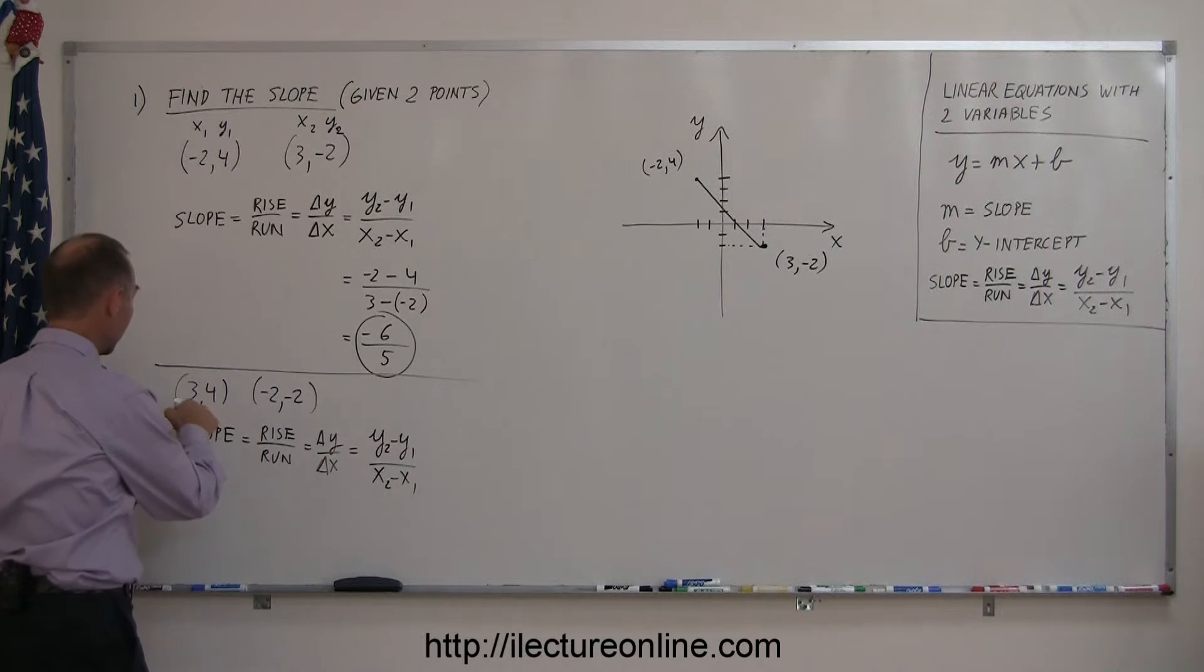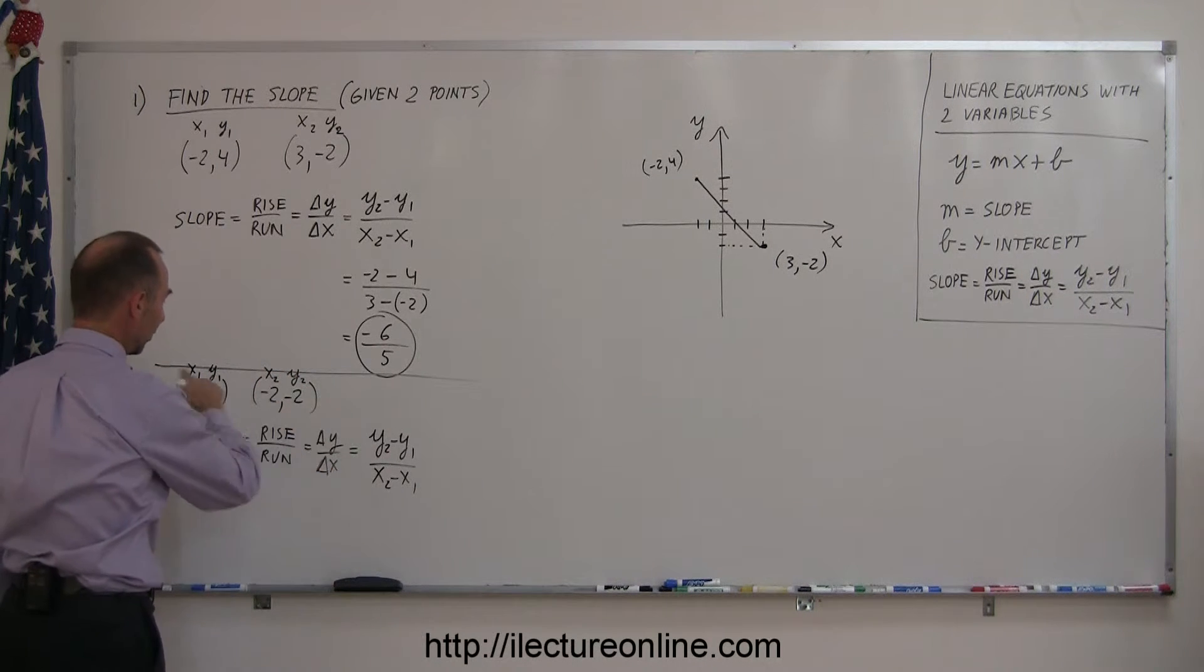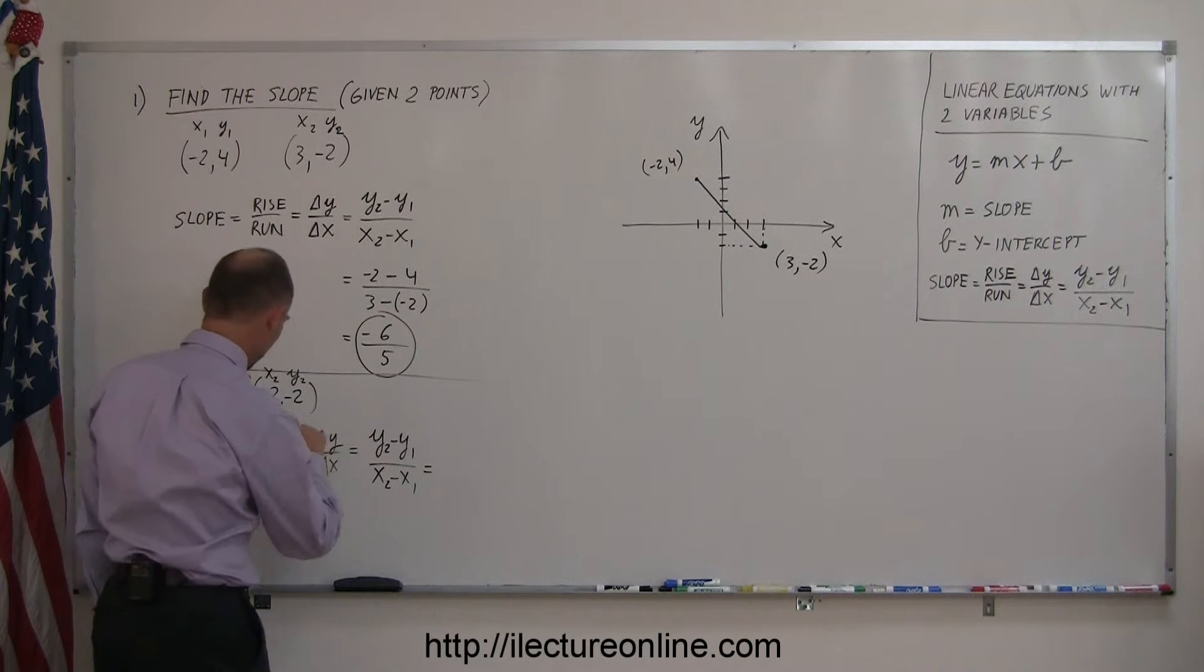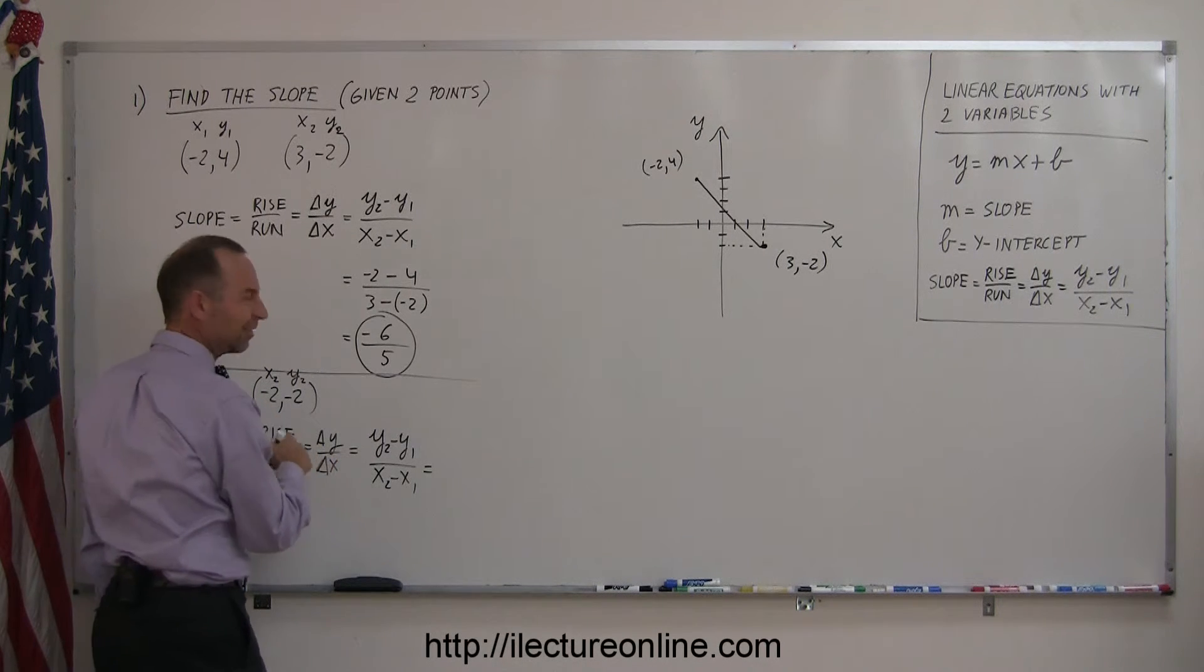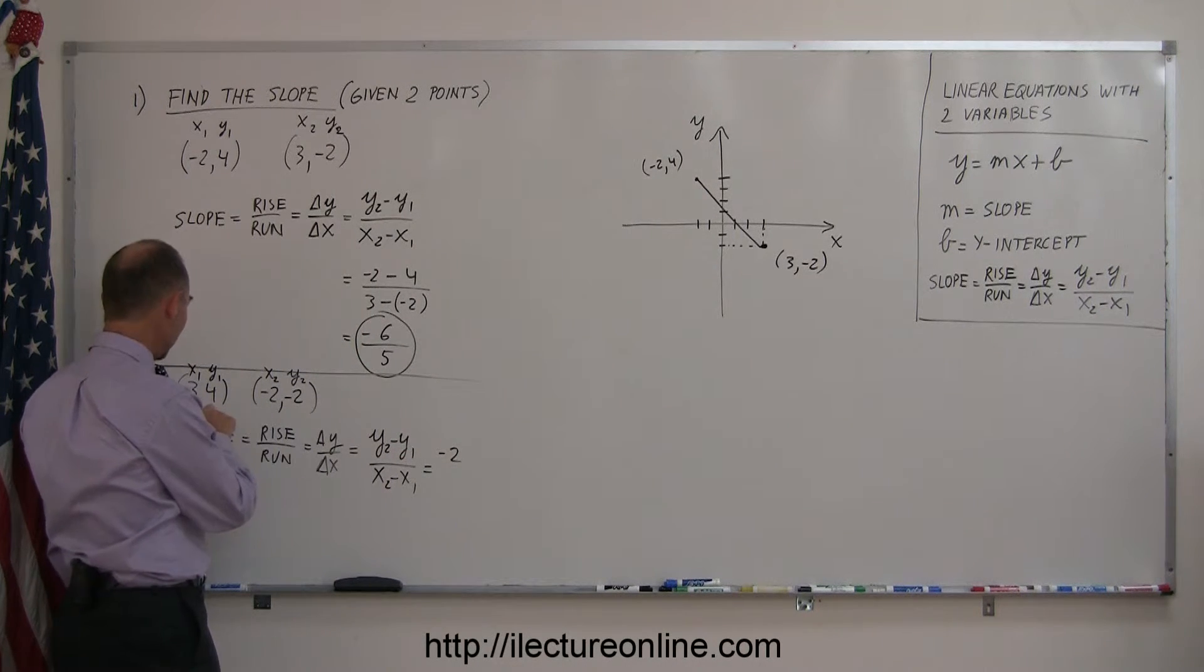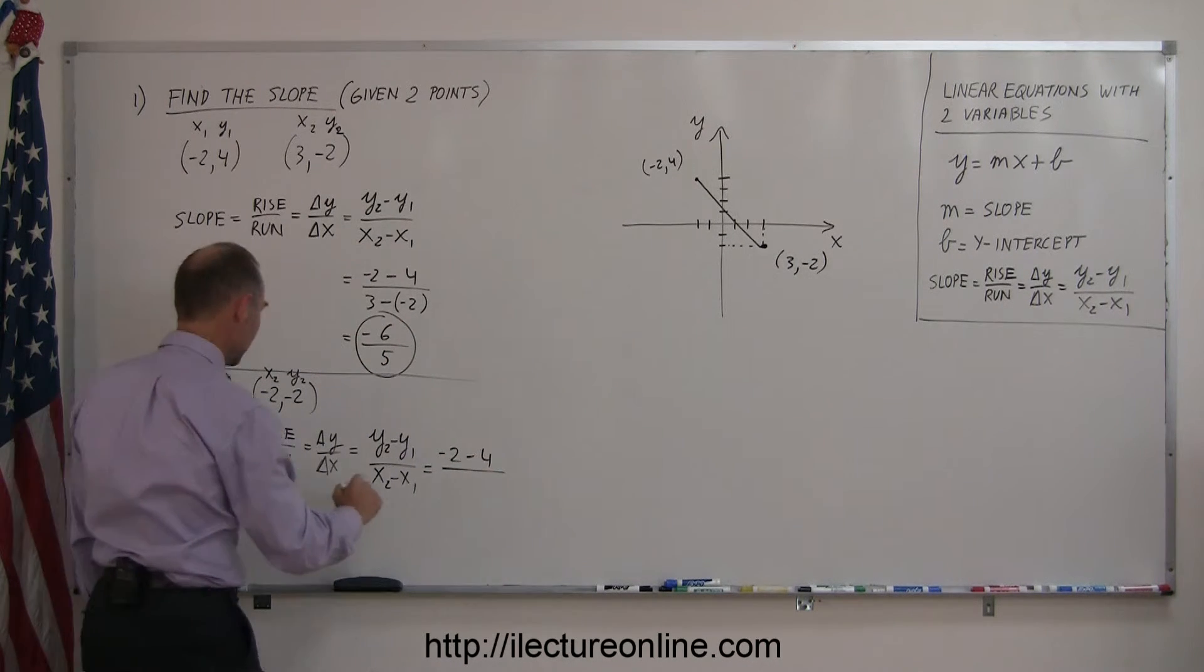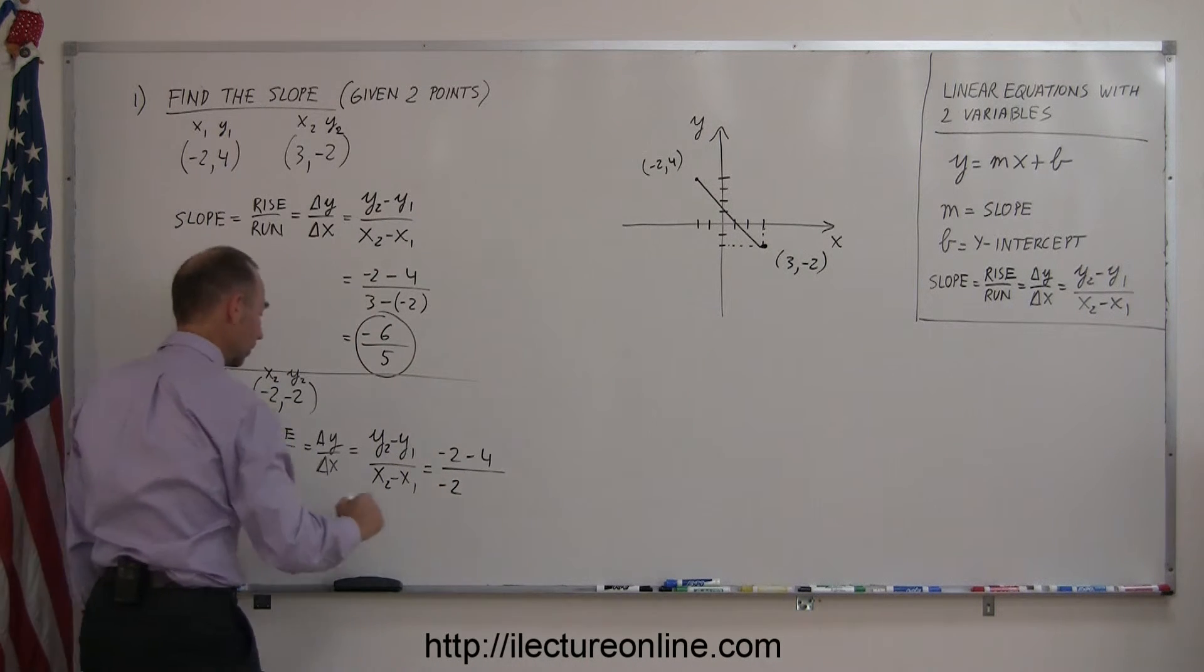And then, it's a good idea to mark your points. So, this is point 1. So, this is x1. This is y1. This is x2. This is y2. And that way, it's very difficult to make a mistake. So, let's plug in the numbers. y2 is negative, right here, negative 2. See, a good thing that I marked them. I almost picked the wrong number here, even though they're the same. This is the number negative 2, is y2 minus y1, so minus 4, divided by x2, which is a minus 2, minus 3.